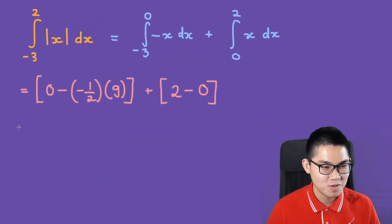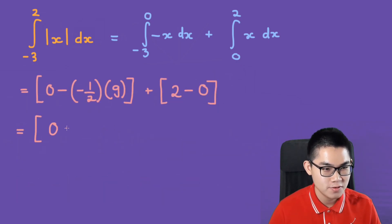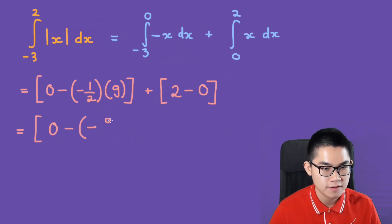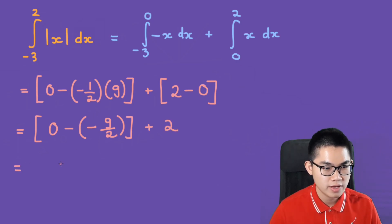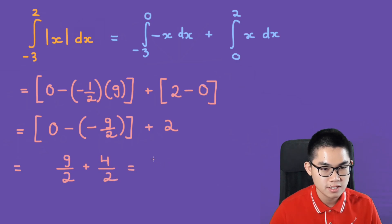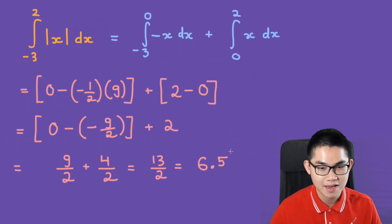And we're almost done. So, we have 0 minus negative 1 over 2 times 9, which is negative 9 over 2, plus 2. This will give us positive 9 over 2 plus 2, which is 4 over 2. This is 13 over 2, which is simply 6.5.